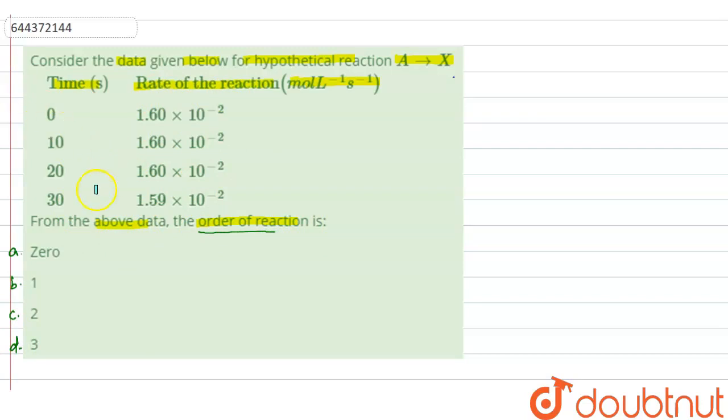Now, what you can observe from here. At time 0 second, we have 1.60 into 10 raised to the power minus 2 mole per liter per second. At time 10 second, rate of reaction is same. Then at 20 second also, the rate of reaction is same. And at 30 second, we have 1.59 into 10 raised to the power minus 2. Now, it is approx 1.60 into 10 raised to the power minus 2.